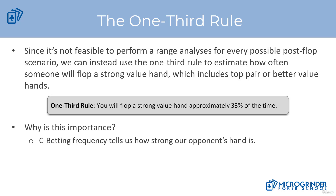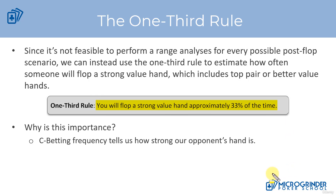The one-third rule is very simple. It states that you'll flop a strong value hand approximately one-third of the time — so 33% of the time you're going to flop a strong value hand, which includes top pair or better hands.